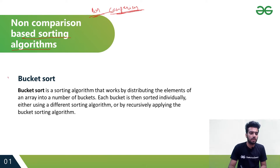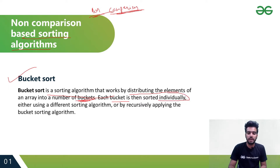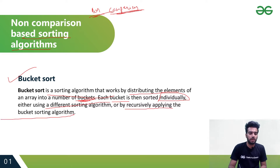Let's move to the first algorithm, which is Bucket Sort. Bucket Sort is a sorting algorithm that works by distributing the elements of an array into a number of buckets. Each bucket is then sorted individually, either using a different sorting algorithm or by recursively applying the bucket sort algorithm.